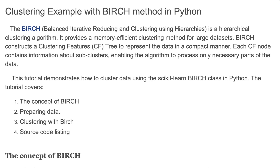The Balanced Iteratively Reducing and Clustering using Hierarchies (BIRCH) is a hierarchical clustering algorithm, and it provides a memory-efficient clustering method for large datasets. Birch constructs a clustering features tree to represent the data in a compact manner. Each CF node contains information about sub-clusters, enabling the algorithm to process only the necessary part of the data.